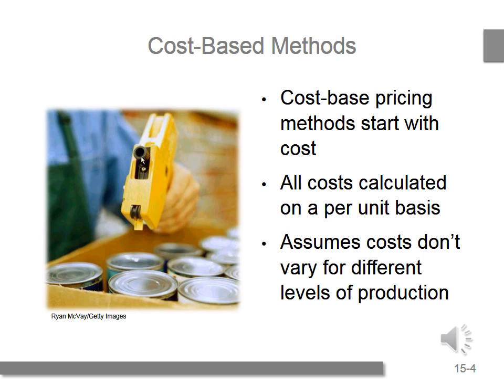Cost-based is the simplest way to derive a price for a product or service. However, the application may be limited due to the fact that the cost-based methods do not recognize the role that customers or competitors play in the marketplace. Once all the costs are added up, this simple method adds a percentage amount to the unit cost to derive the price of the good. Simplicity is the major benefit of this method — it is merely a simple mathematics calculation. But the biggest negativity is that it does not consider the value the customer places on the product or service.